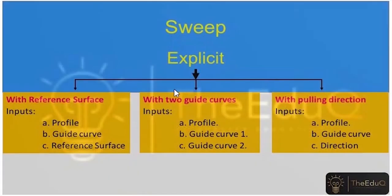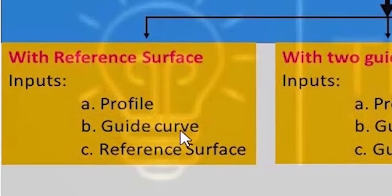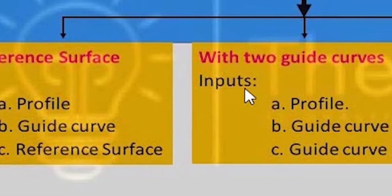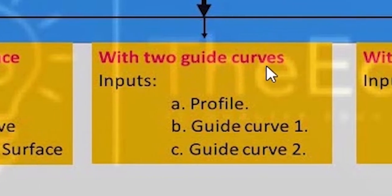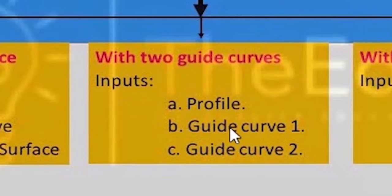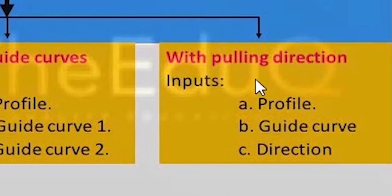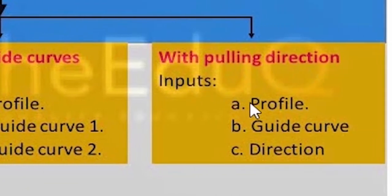For explicit, we have three different options: with reference surface, with two guide curves, and with pulling direction. For the reference surface option, the inputs are profile, guide curve, and reference surface. With two guide curves, the inputs are profile, guide curve 1, and guide curve 2. With pulling direction, the inputs are profile, guide curve, and direction.